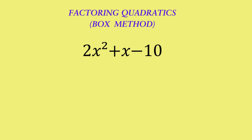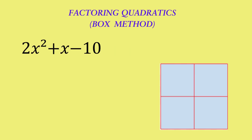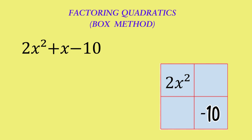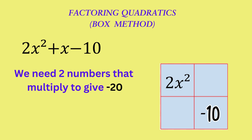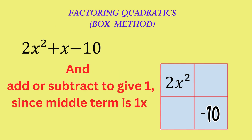Let's factorize the expression 2x squared plus x minus 10. We're going to draw a 2 by 2 grid or box. The first term, which is 2x squared, will go into the top left, and the final term minus 10 will go into the bottom right. To fill the next two spaces in the box, we need to find two numbers that multiply to give negative 20 and add or subtract to give the middle term 1.